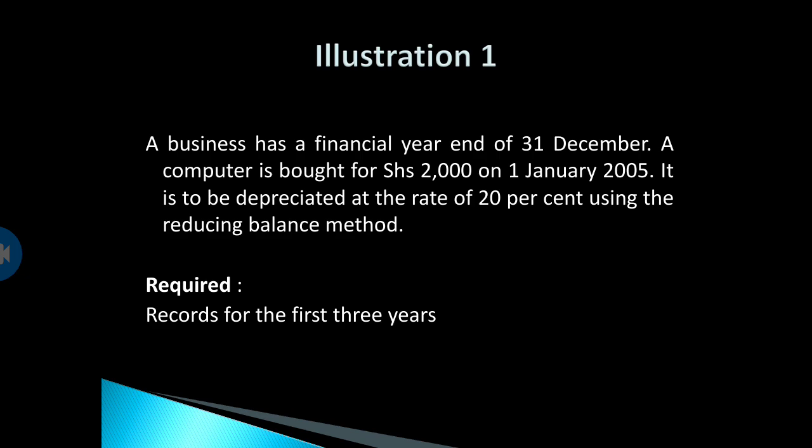The straight line method charges a constant annual depreciation amount in each year throughout the asset's useful life — the depreciation per annum is the same throughout. The reducing balance method charges a higher depreciation amount in the earlier years compared to the later years. So this computer is depreciated at 20% using the reducing balance method. We are required to prepare records for the first three years.